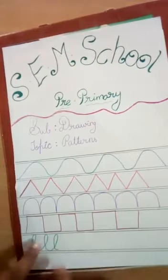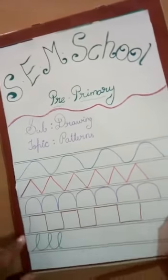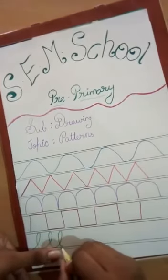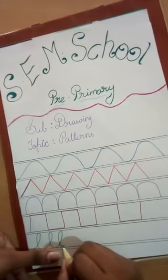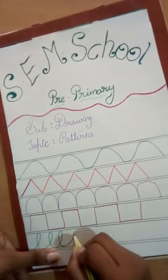And the last pattern we are going to draw is just like an L, the letter L. First of all, starting from the downward, just go straight to the up and again down like this, and again go to the up.